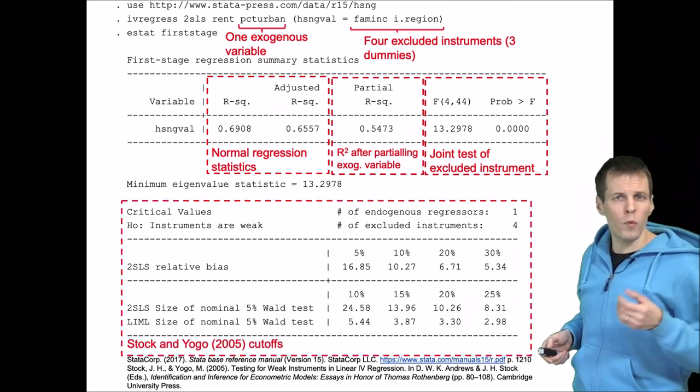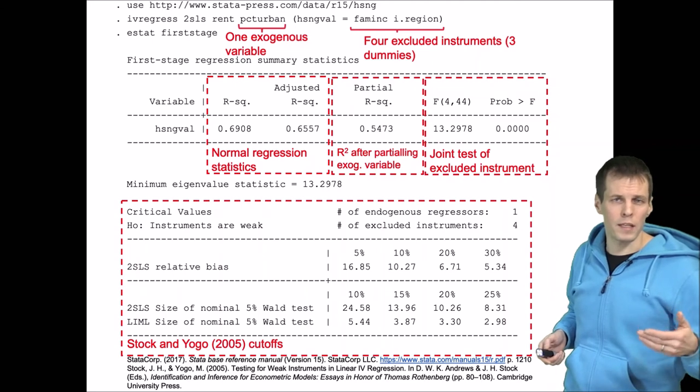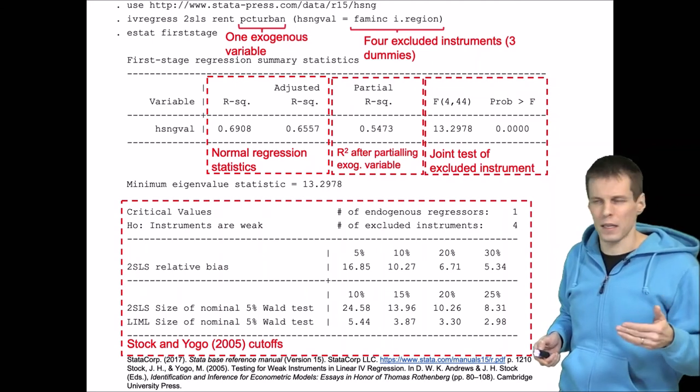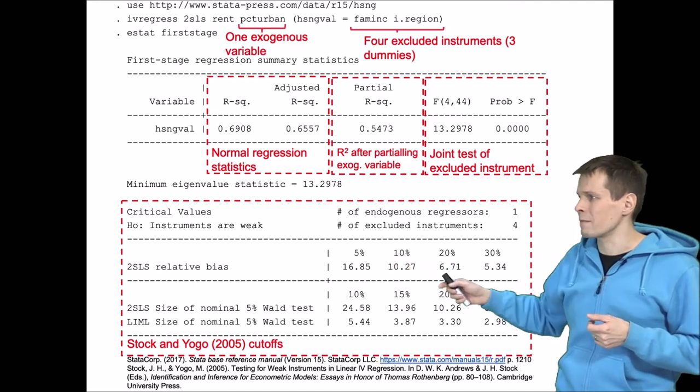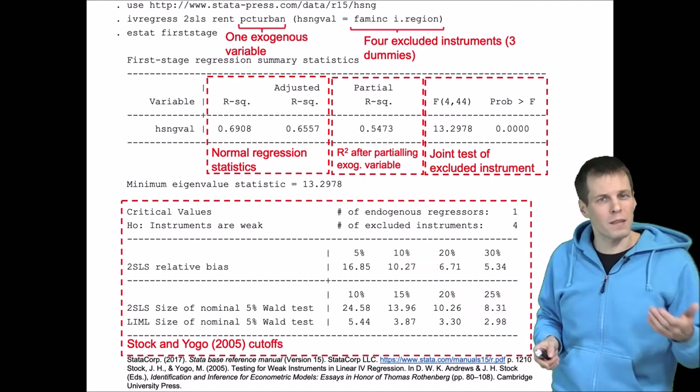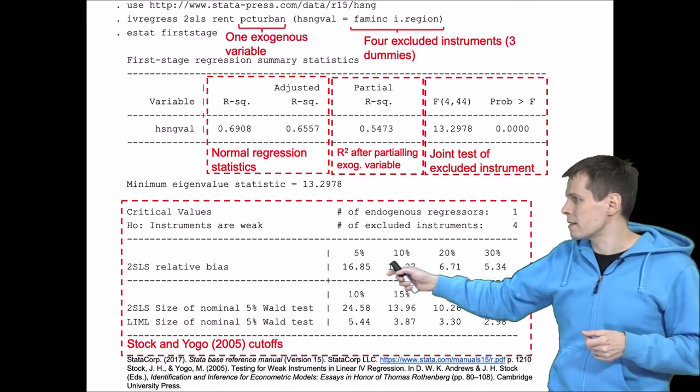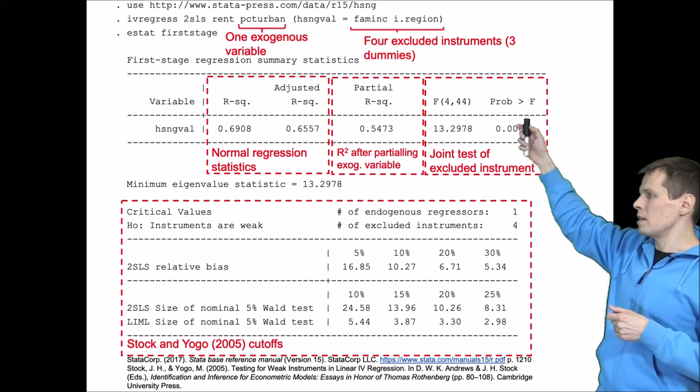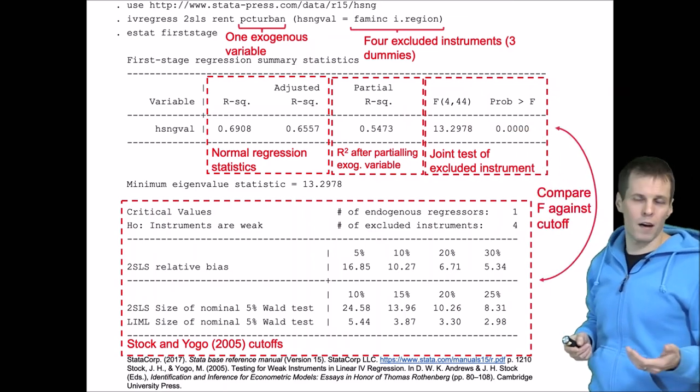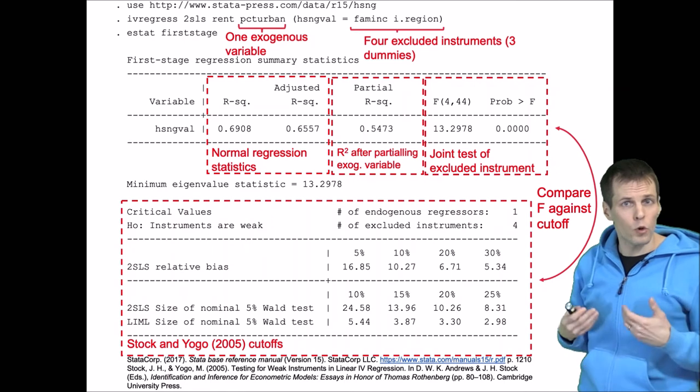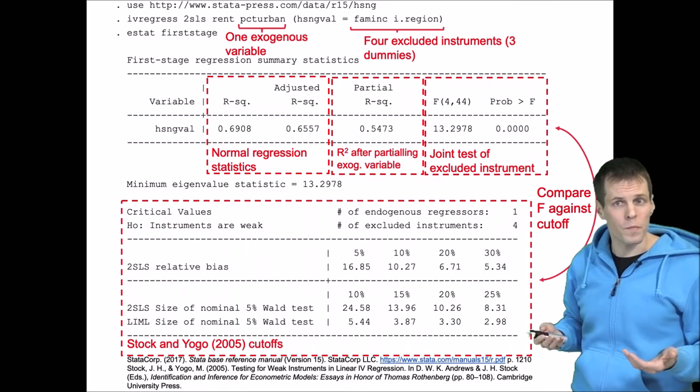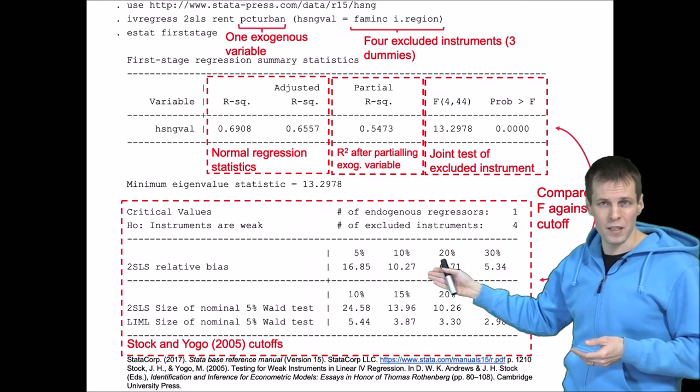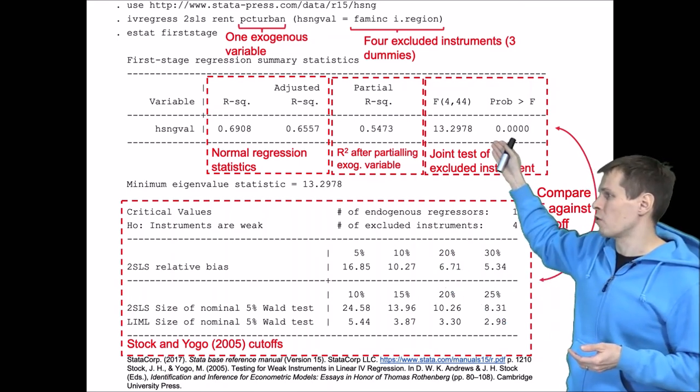And how we apply this table is that we choose what is our acceptable level of bias. If we think that five percent bias is acceptable, then we conclude that our cutoff is 16.85, and if this F statistic here is less than that cutoff, then the instruments are too weak for our purpose. And if we are okay with 10 percent bias, which is pretty large, then this F statistic would be okay.